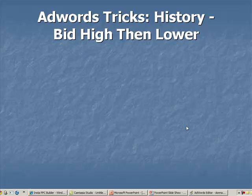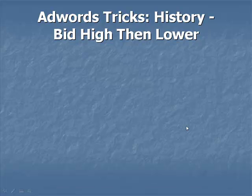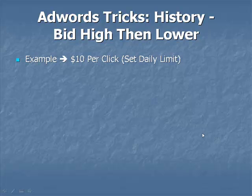You want to have this high click-through rate and maintain it, because Google will see your ads as highly relevant over time — that's where the history comes in. You want high relevancy over time, and one way to demonstrate that to Google is by having a high click-through rate from the very beginning and maintaining it. So we're going to work with the system — it's not really a trick, it's just following their rules and giving them exactly what they're looking for.